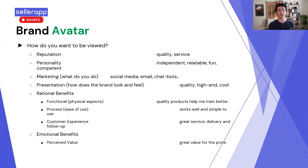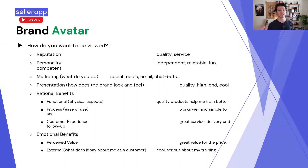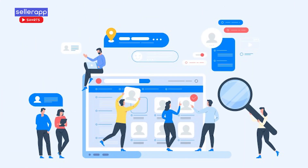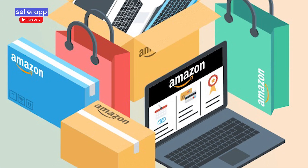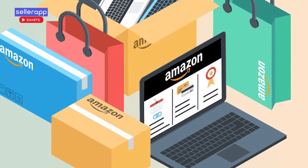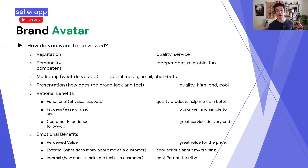Then there's the emotional side, and this is arguably more important than the rational side. There's the perceived value — we wanted people to say it's great value for the price. There's also the external aspect of the emotional benefit: what does it say about me as a customer? Everybody cares what people think of them, whether they admit it or not — deep down they do, it's a human thing, we're wired that way. We wanted Beast Gear customers to feel that their products made them look cool and serious about their training.